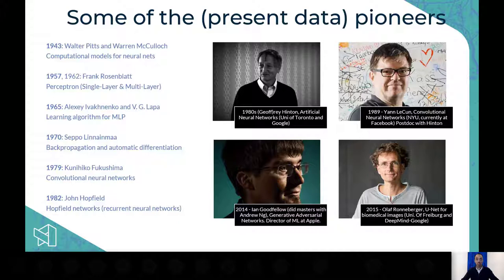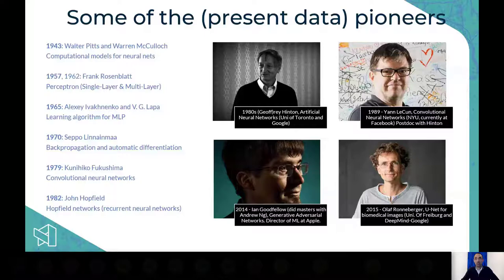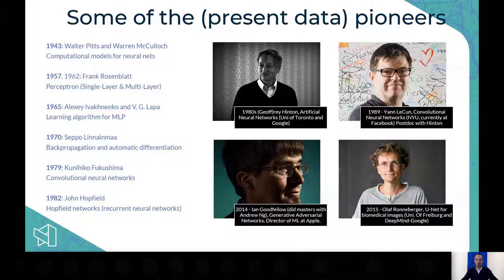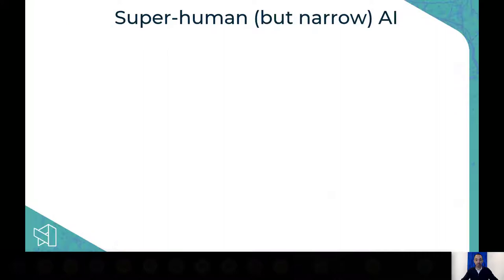Ian Goodfellow created a very interesting extension of convolutional neural networks: two CNNs competing against each other, described as a generative adversarial network. These perform even better, though with some artifact generation concerns. In our field of biomedical imaging, Olaf Ronneberger is perhaps best known — he created the UNet, which allows end-to-end training and image segmentation, and has been used for many other applications including the CARE paper.